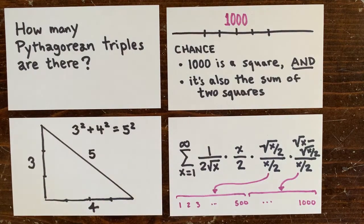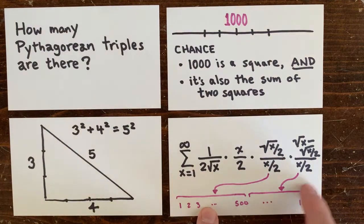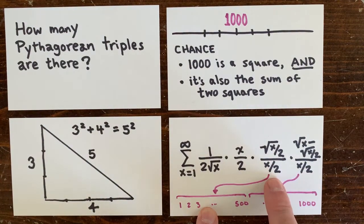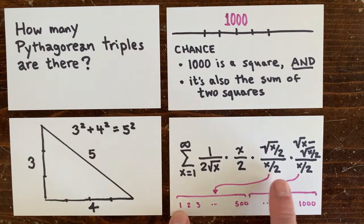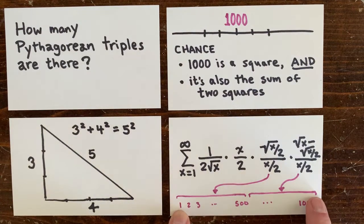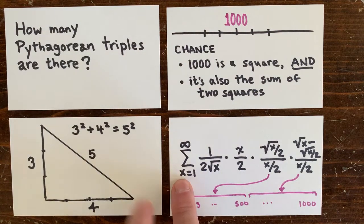And the number of squares in that region is this. So if we divide one by the other, we get the chance that the larger number is a square. And likewise, here's the chance that the smaller number is a square. So here's the gnarly formula that estimates the probability of a Pythagorean triple at n equals z squared.